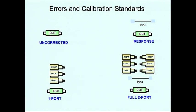When the highest accuracy is needed, a full two-port calibration is done. The full two-port calibration removes errors like directivity, source and load match, reflection tracking, transmission tracking and cross-talk. We will now do a full two-port calibration.